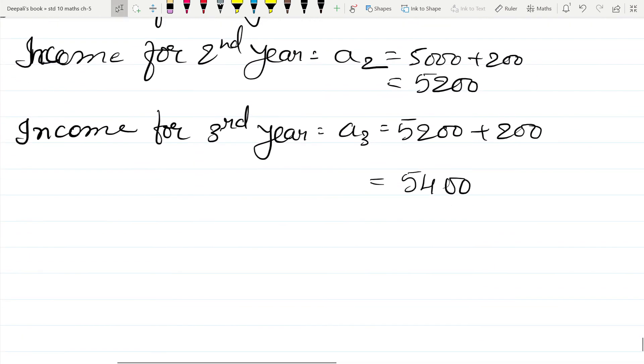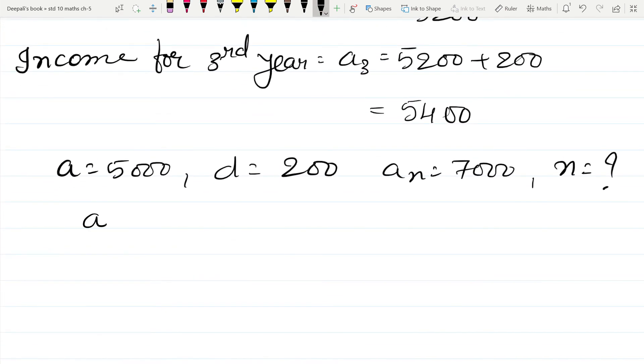Now we know that A is equal to 5000, D is equal to 200, AN is equal to 7000. N is equal to how much? Apply this in the formula AN is equal to A plus N minus 1D. This will be your homework.